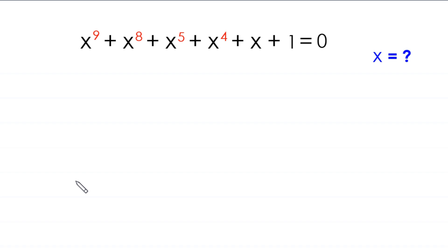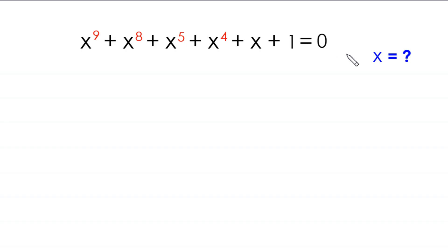Hello everyone, welcome to solving this very nice algebra equation: x to the power 9 plus x to the power 8 plus x to the power 5 plus x to the power 4 plus x plus 1 is equal to 0. Our job is to find all possible values of x.